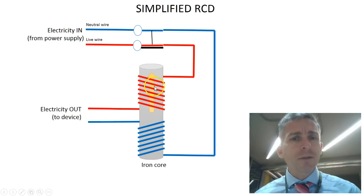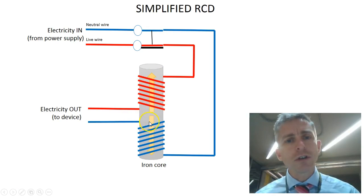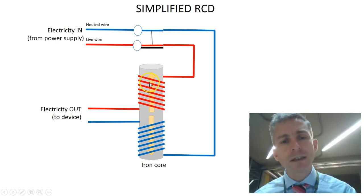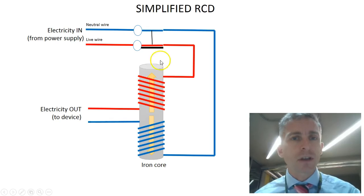So you get a magnetic field produced by one coil, the live wire, and a magnetic field produced by the neutral wire. And in normal operation, these two currents will be the same. And so these two magnetic fields will be the same, and they cancel each other out. Now you get no magnetic field overall, and so nothing happens to the switch gear.